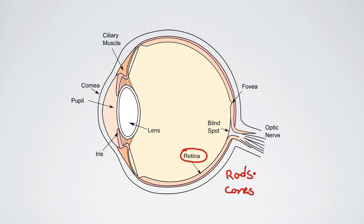We said that the rods are for black and white vision and just for detecting light, and the cones allow us to see detail and color.